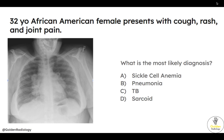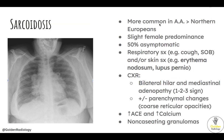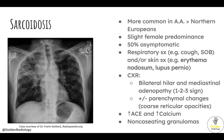Next question: 32-year-old African-American female presents with cough, rash, and joint pain. What is the most likely diagnosis? This is sarcoid. The tip-off is lymphadenopathy in the mediastinum to the right of the trachea, as well as the bilateral hila — this is known as the 1-2-3 sign, a classic appearance for sarcoidosis. Sarcoid is most common in African-Americans with a slight female predominance. Labs may show elevated ACE and calcium levels, and pathology will show non-caseating granulomas. About half of patients are asymptomatic; the rest have respiratory symptoms such as cough and shortness of breath, and skin symptoms such as erythema nodosum or lupus pernio.